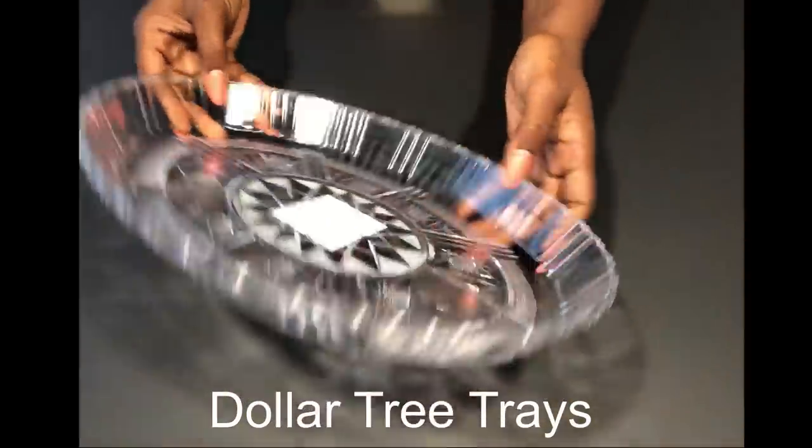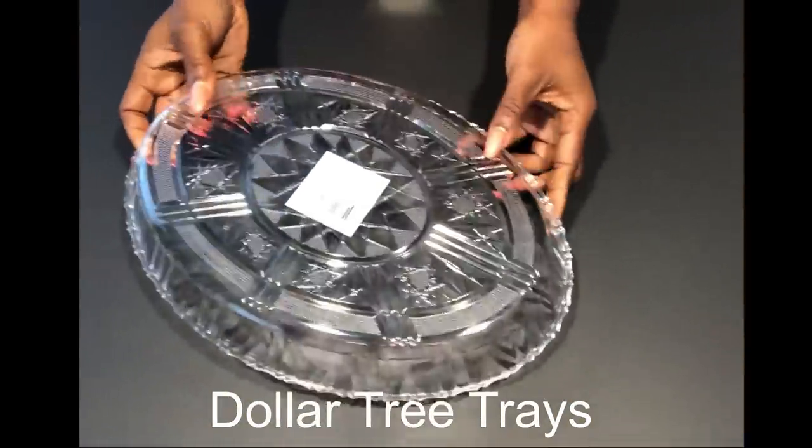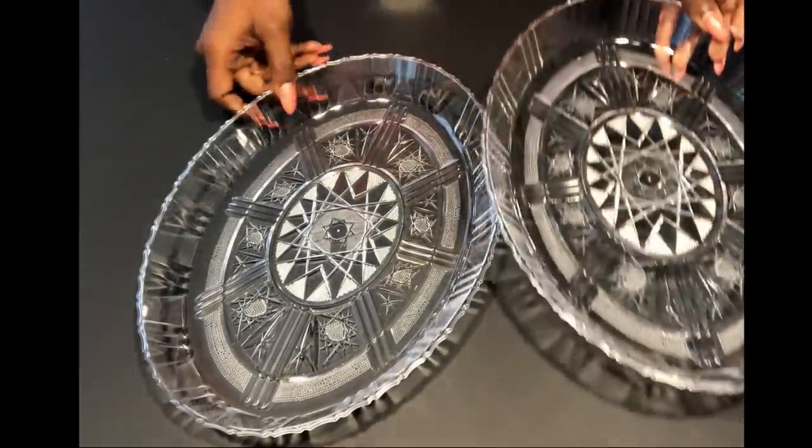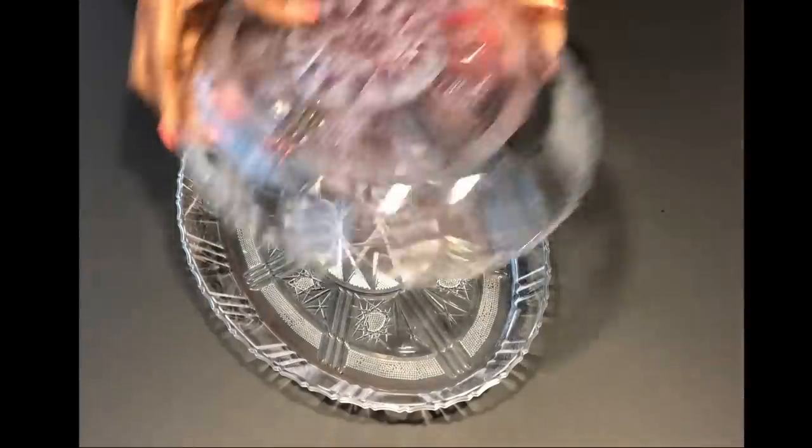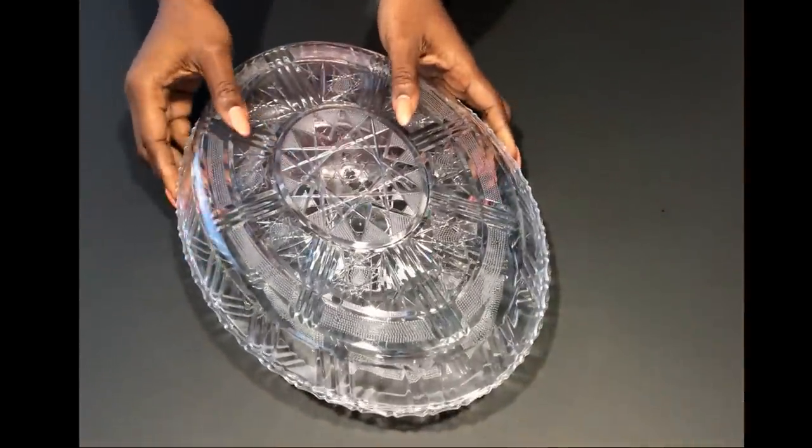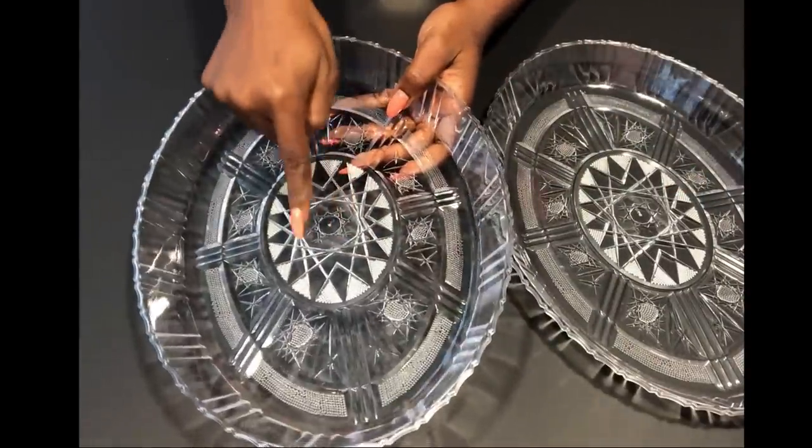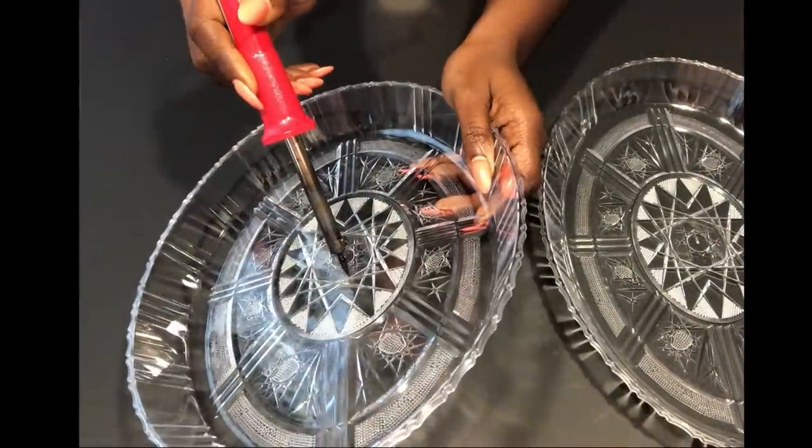I'll be starting off with trays that I got from the Dollar Tree. I'll be gluing two trays together. But before that, I'm going to make holes inside the trays with a soldering iron. And these holes will make it easy for me to pass the dowel through it.